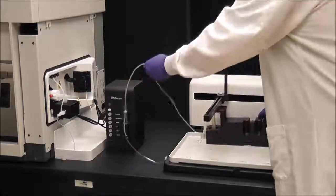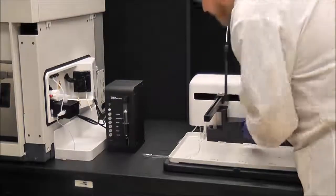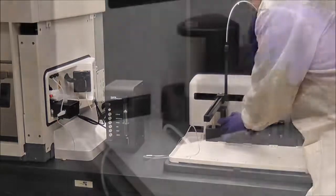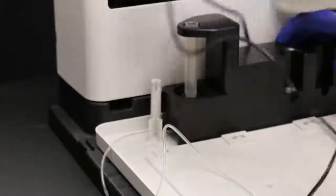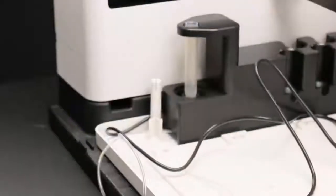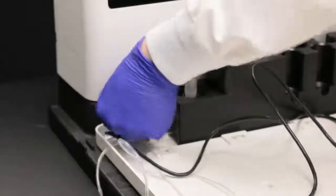Place the vortex module onto the spill tray. Pass the cable behind the vortex module and through the hole at the base of the auto sampler.